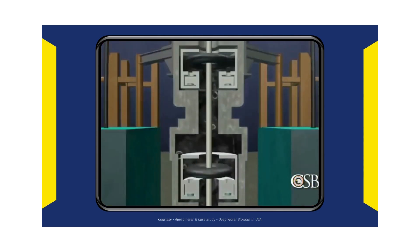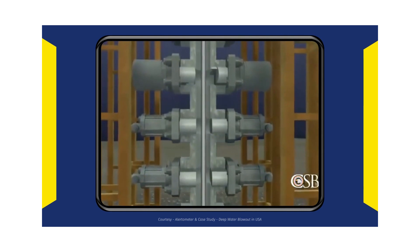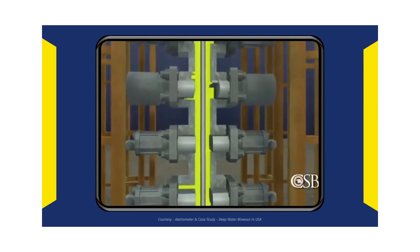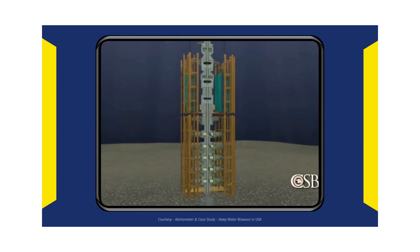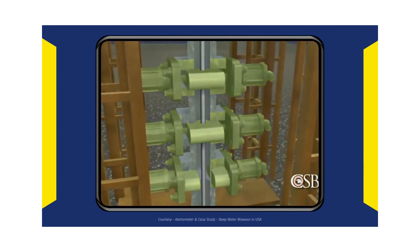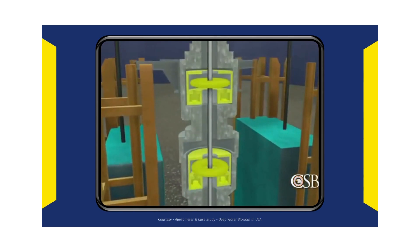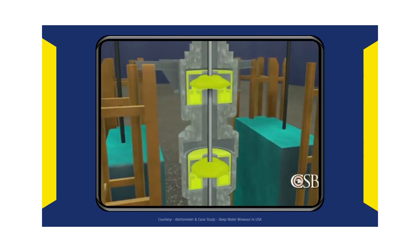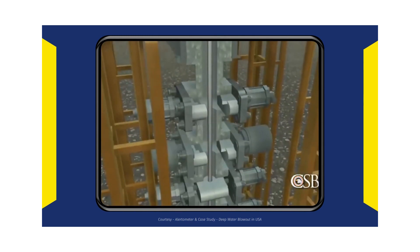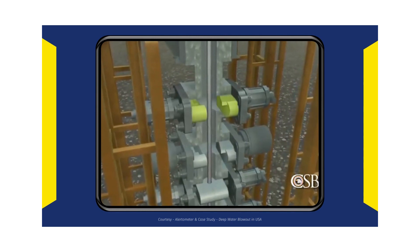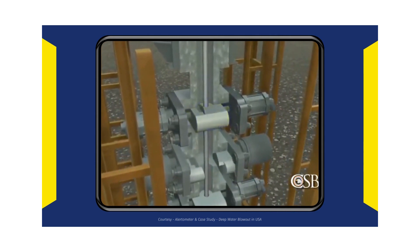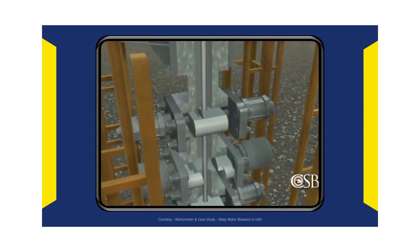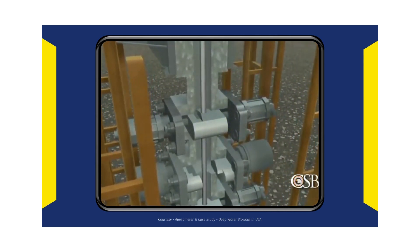If a kick occurs, the blowout preventer is designed to prevent flammable oil and gas from traveling up the riser to the drilling rig by sealing the area around the drill pipe — known as the annular space. The crew can manually close pipe rams and donut-shaped rubber devices known as annular preventers. If those devices should fail, the last resort is a pair of sharp metal blades forming a blind shear ram designed to cut the drill pipe and seal the well. The blind shear ram can be activated manually or by automated emergency systems.